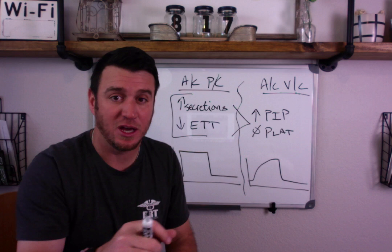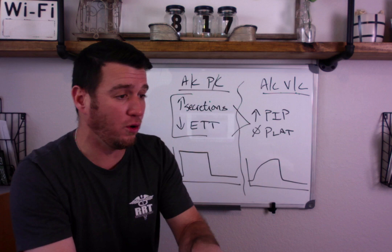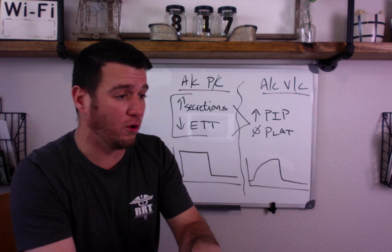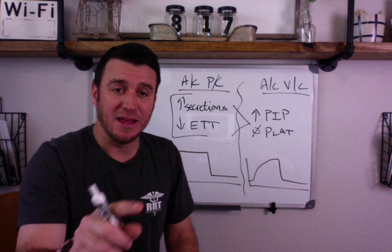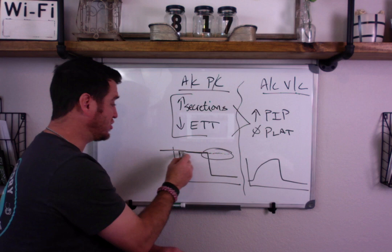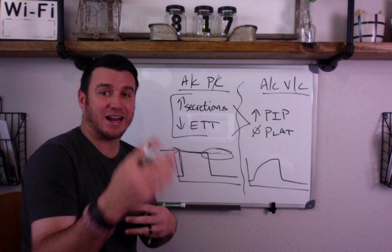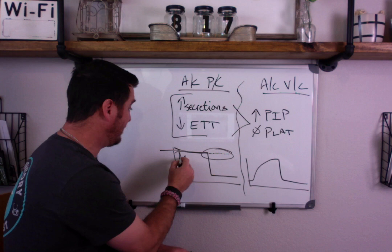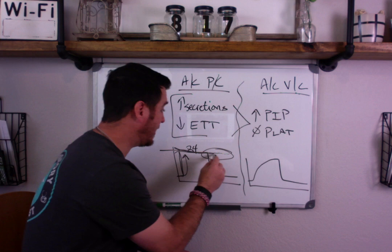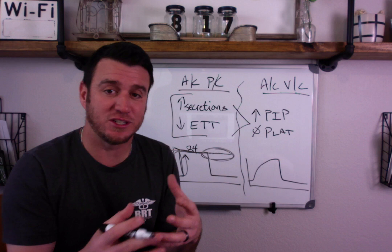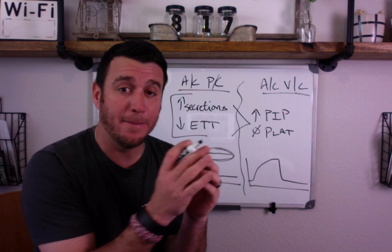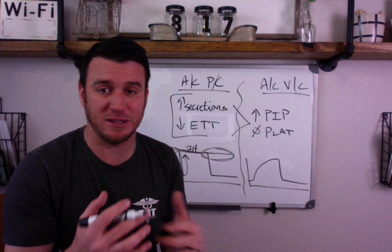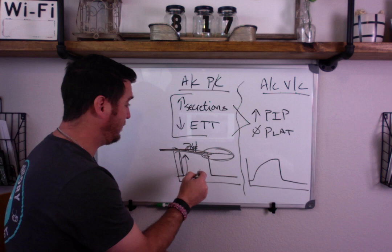When you perform an inspiratory hold — which by definition means the mechanical ventilator holds the breath that was delivered — you have to understand that in pressure control, when you do a hold, the pressure is going to stay right there. Because in pressure control, you told the vent to hold the breath delivered. Well, you told the vent to deliver a pressure of — let's say 24. So it's going to hold that pressure at 24. You're not going to get that dip to see what the alveolar plateau pressure is versus what the peak inspiratory pressure is. In pressure control, PIP and PLAT will be the same. You can't differentiate between the two because the vent is holding at a pressure.